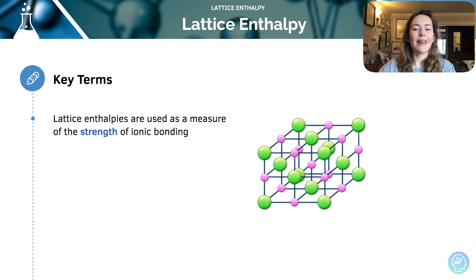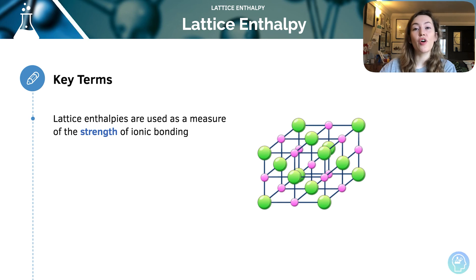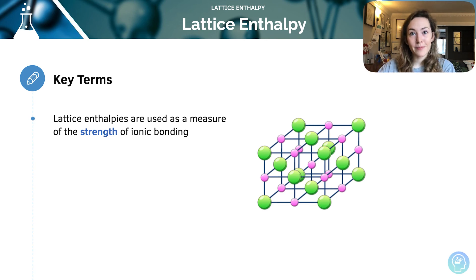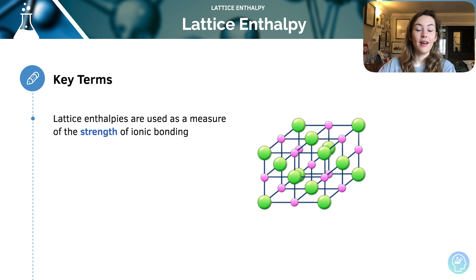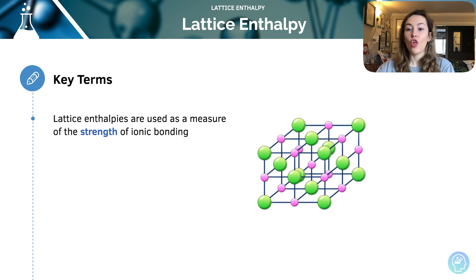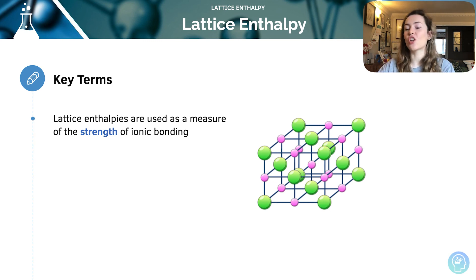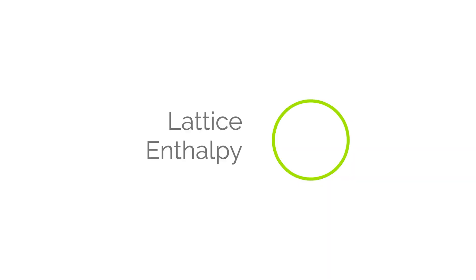Why do we care about lattice enthalpies? They're very useful because they're used as a measure of the strength of ionic bonding. The larger the magnitude of the number — regardless of whether it's positive or negative — the stronger the ionic lattice. So comparing 1036 to 10, the larger that value, the stronger the ionic lattice, and that can give us a lot of information.